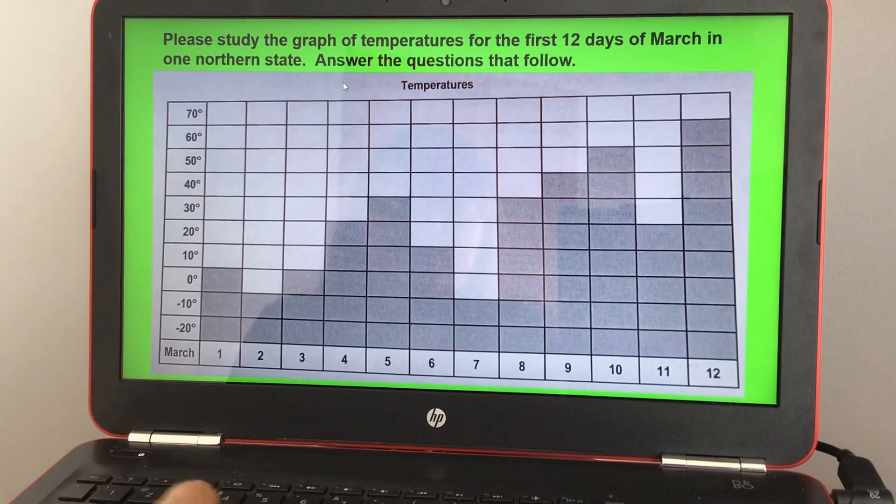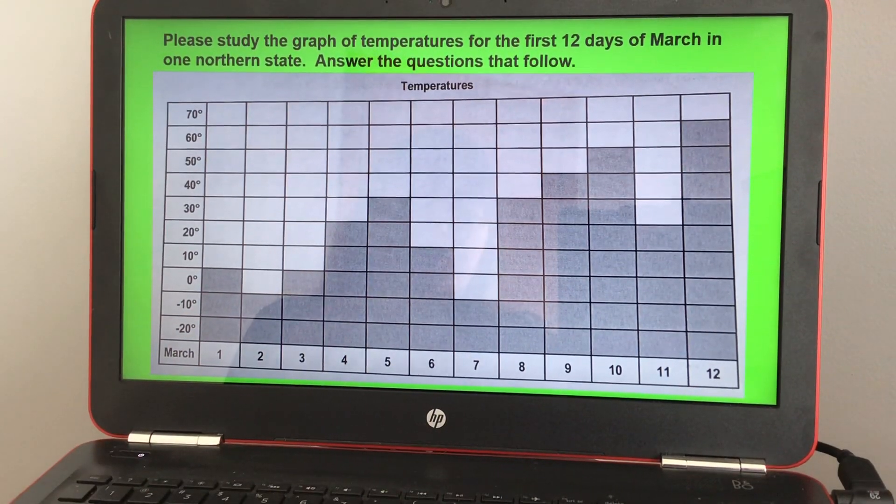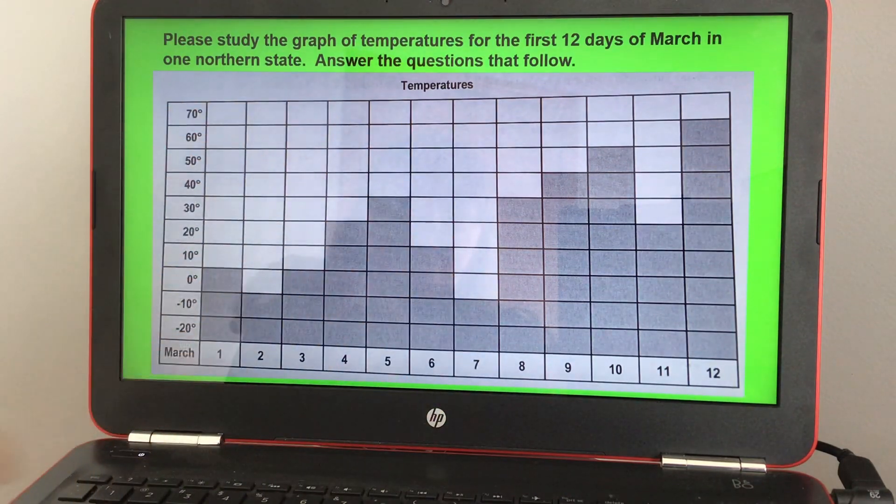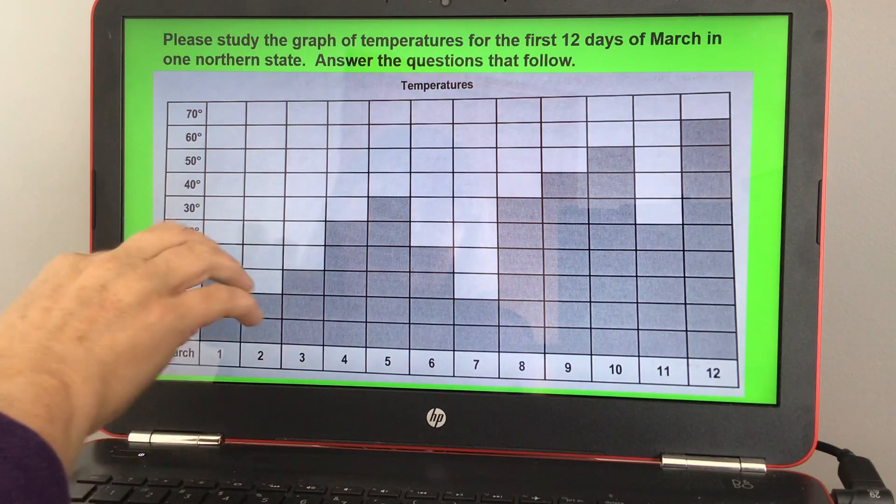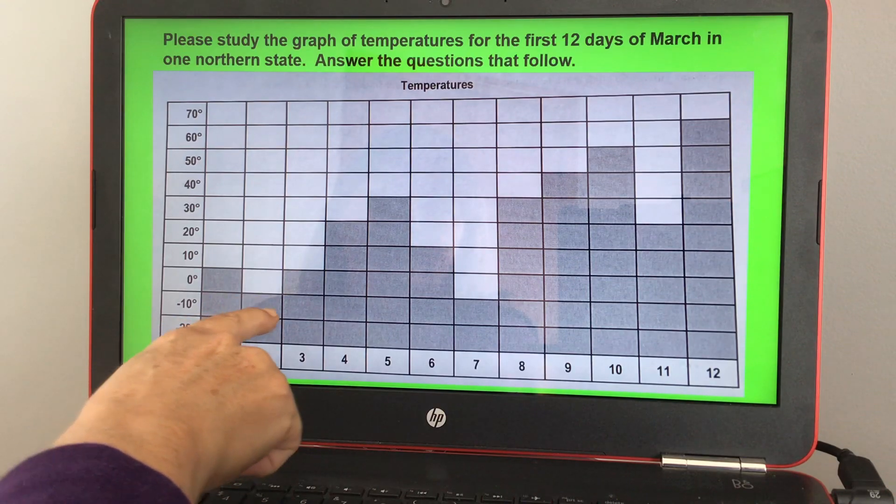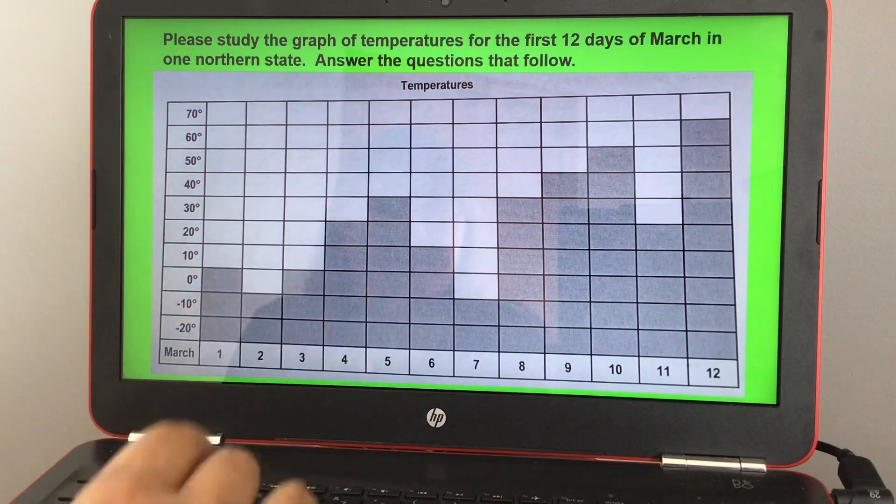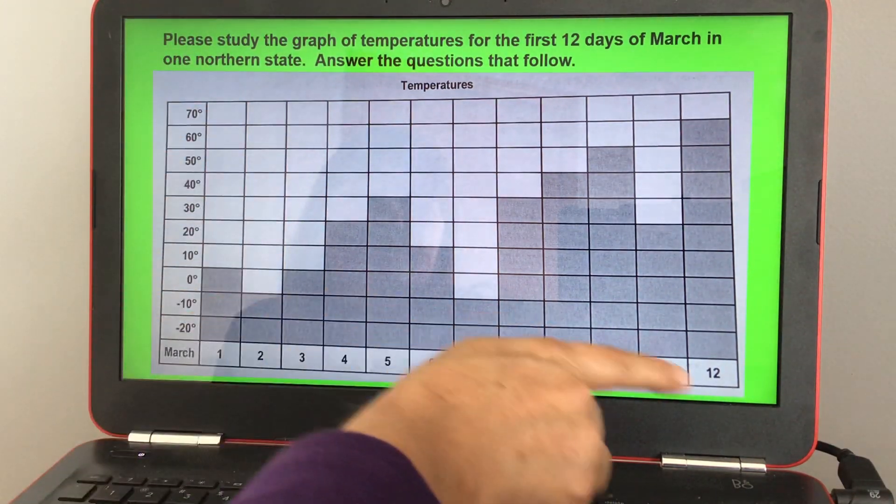You're gonna look at this graph. It's 12 days of March and it's colored in, and I have a copy by your questions as well. So like, let's say March 1st is zero degrees, March 2nd was negative ten degrees, and March 3rd was zero degrees. Okay, so you understand. And remember that this is the y-axis, this is the x-axis.